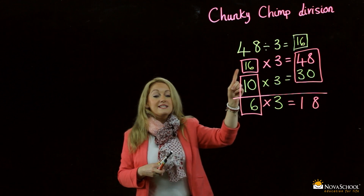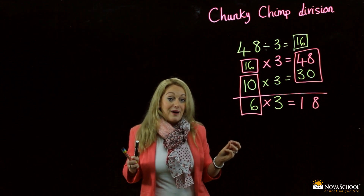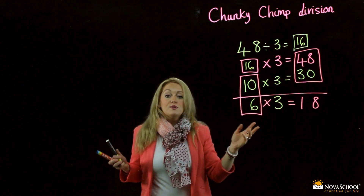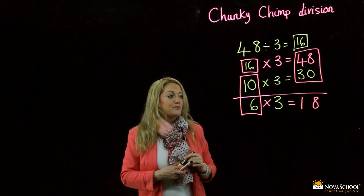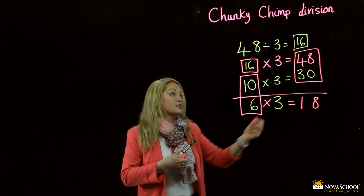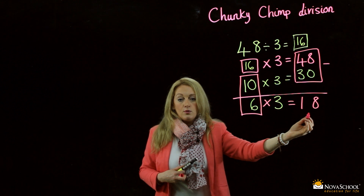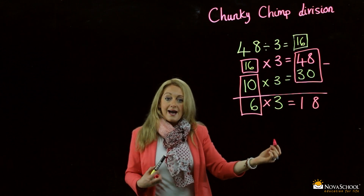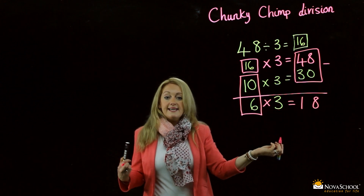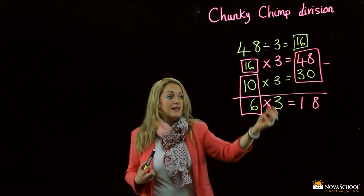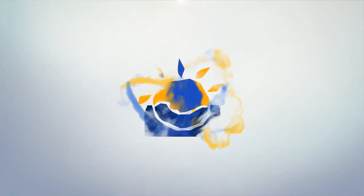Let's run through the steps again. 48 divided by 3 is something. We know that something multiplied by 3 is 48. So we choose a nice, happy number with a 0 — 10 is the best choice here. 10 multiplied by 3 is 30. We do a subtraction: 48 subtract 30, we get 18. Now we go to our 3 times table — what do we times by 3 to get 18? The answer is 6. 6 multiplied by 3 is 18. So 10 and 6 makes 16, and that's our final answer.